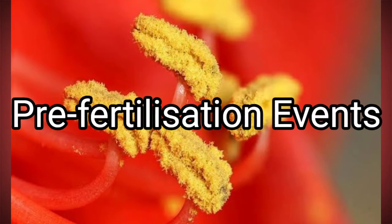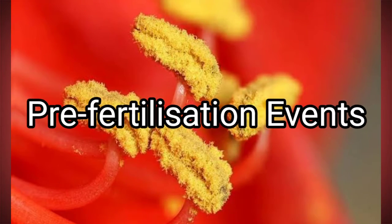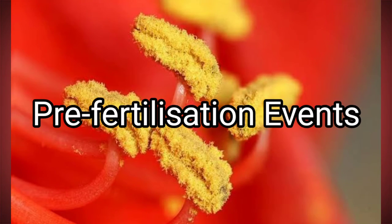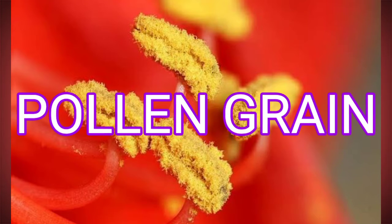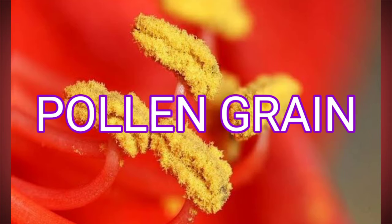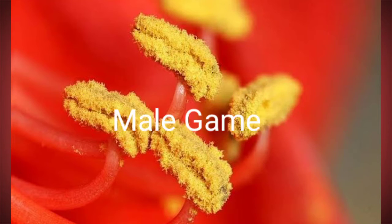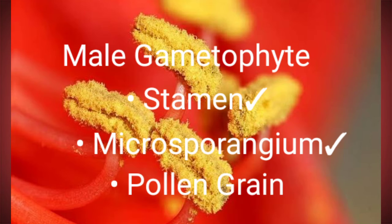Welcome back to the online class. In the last video I explained about the male gametophyte, which is one of the pre-fertilization structures in flowering plants. We discussed about the structure of stamen and microsporangium. Today we shall discuss about the structure of pollen grain, which is a male gametophyte.